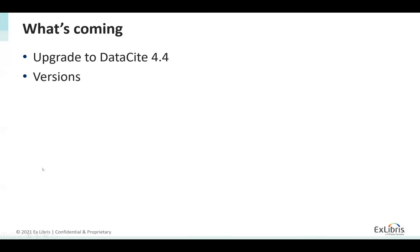Just to conclude: things we're looking at — one thing we haven't done yet but is on our immediate roadmap is to upgrade to DataSite 4.4. Another thing we're very eager to start working on is versions, which is mainly relevant to data sets. First, versioning within Exploro, and then interfacing with DataSite to support versions for DOIs.